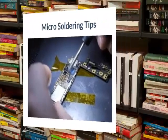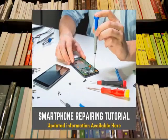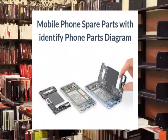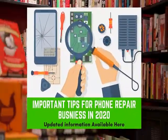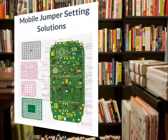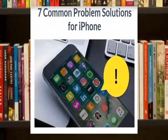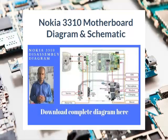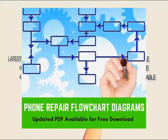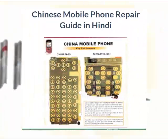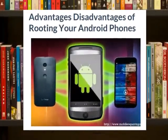Micro Soldering Tips. Smart Phone Repair Book. Identify Mobile Phone Parts and Integrated Circuit with Phone Parts Diagram. Important Tips for Mobile Phone Repair Technician. Mobile Jumper Setting Solutions. 7 Common Problem Solutions for iPhone. How to Read iPhone Schematics. Nokia 3310 Motherboard Schematic Diagram. Phone Repair Step-by-Step Flow Chart Diagrams. China Mobile Phone Circuit Diagrams. Advantages of Rooting Your Android Phones.